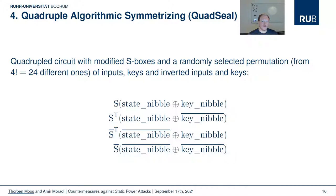The next countermeasure is called Quadruple Algorithmic Symmetrizing, or Quad SEAL. It has been proposed as a countermeasure against both dynamic and static power analysis attacks. Essentially, Quad SEAL quadruples the unprotected circuit while modifying the S-box table in three of the four copies. Then a random permutation of inputs, keys, inverted inputs, and inverted keys is selected from 24 possibilities and given to the four circuits. The idea is to balance all Hamming weights and distances occurring in a cipher implementation and to rotate inputs to account for remaining dependencies due to process variations, aging effects, and path imbalances.